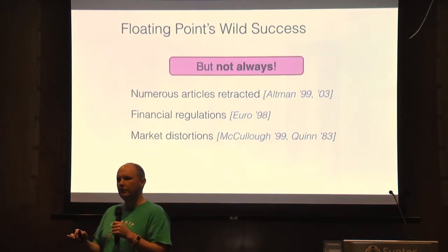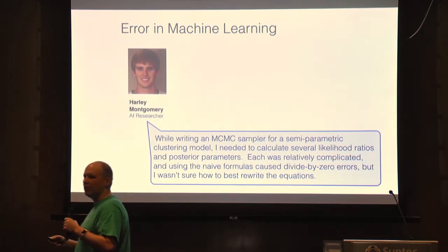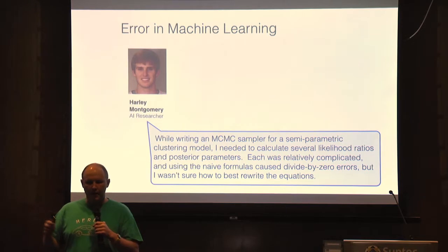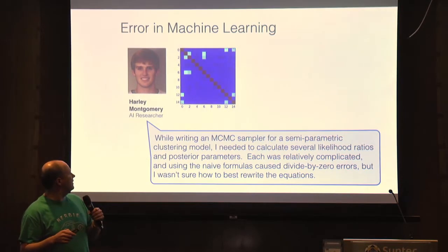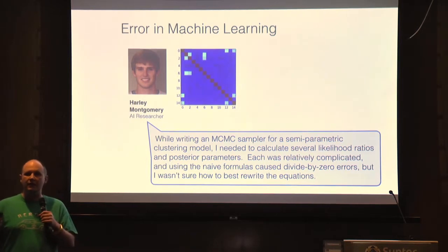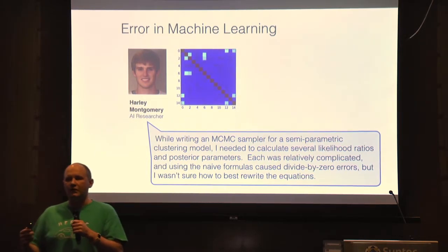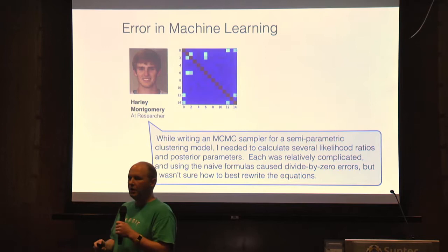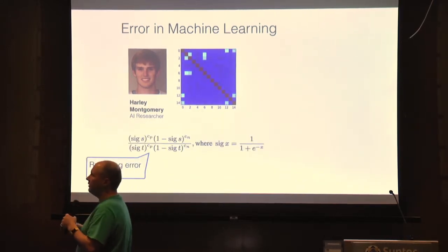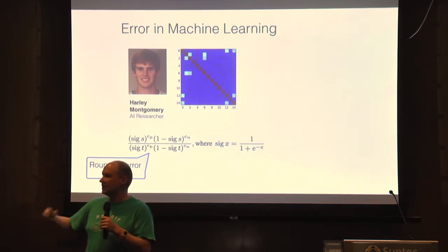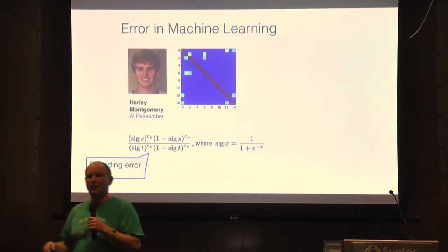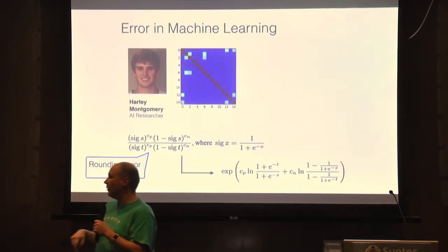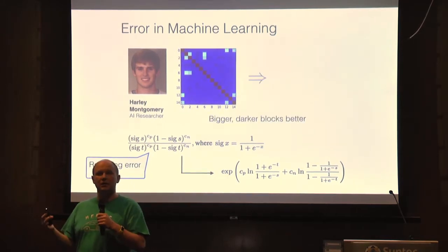Harley Montgomery is a machine learning researcher who was trying to write a clustering routine. When he first wrote it, he got clustering that basically put every item in its own bucket — not useful at all. It turned out he had an expression buried deep in his C++ code causing divide-by-zero errors that prevented his code from even running. After using some of the tools I'm going to talk about, we were able to rewrite it and he got a really nice clustering.